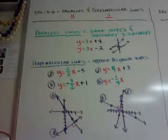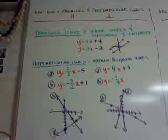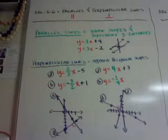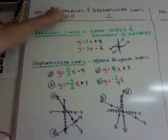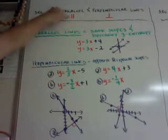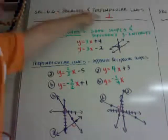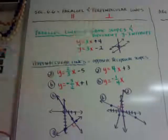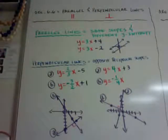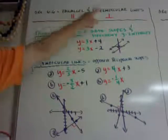Hi guys, this is section 6.6 which is parallel and perpendicular lines. You can see that I put some symbols for parallel, which is two straight lines, and perpendicular, which is like an upside-down T. So when you see those symbols, that means parallel and that means perpendicular.